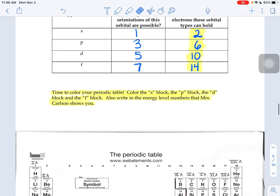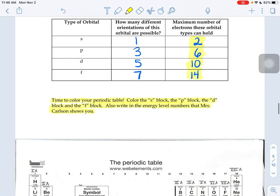So up here, we said that the S block, the S's, can hold two electrons, the P can hold six, D can hold 10, and F can hold 14.